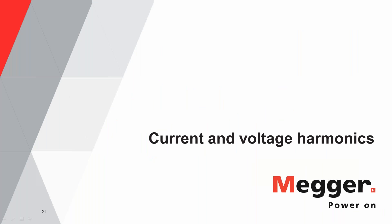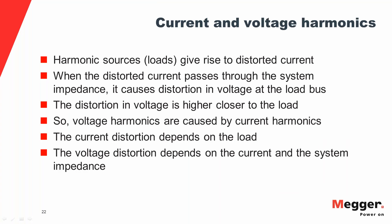Now let's look at current and voltage harmonics. Current harmonics are what we saw so far — the distorted current drawn by a nonlinear load. When that distorted current flows through the system impedance, it gives rise to voltage distortion. So voltage harmonics are caused by current harmonics. Current distortion depends solely on the load, but voltage distortion depends on both the current and the system impedance through which it passes.